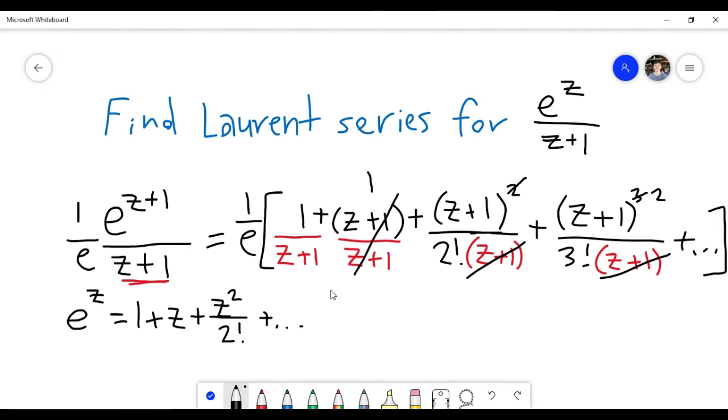So what this actually ends up being, we have 1 over e times 1 over z plus 1. This is after I canceled everything, so I just have plus 1.